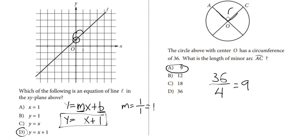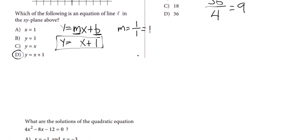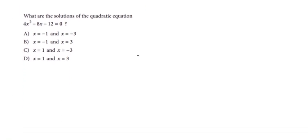The third question we have is what are the solutions of the quadratic equation 4x² - 8x - 12 = 0. So first I'm going to rewrite it, then we can identify that each of these terms have a four in common.